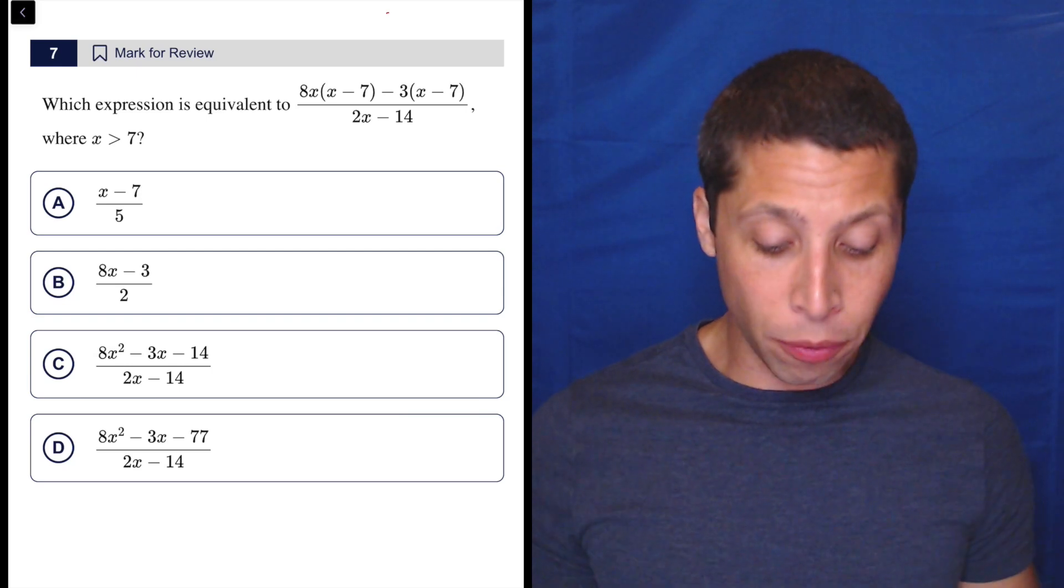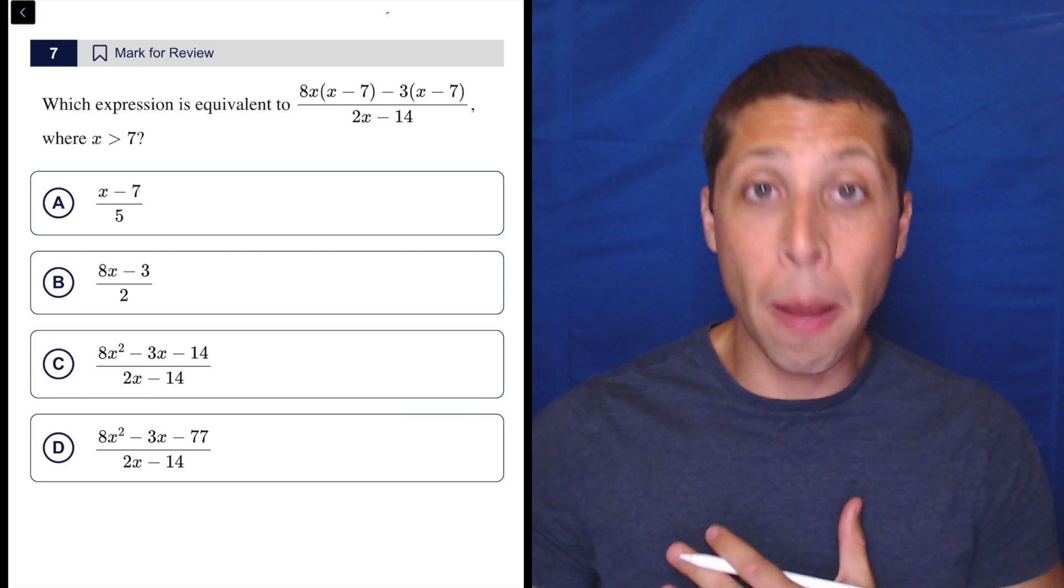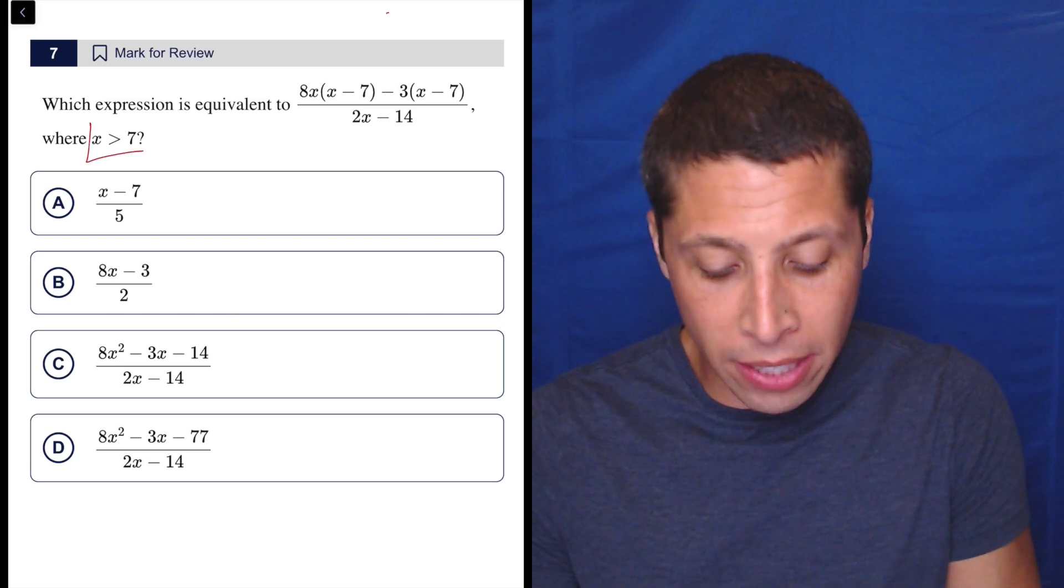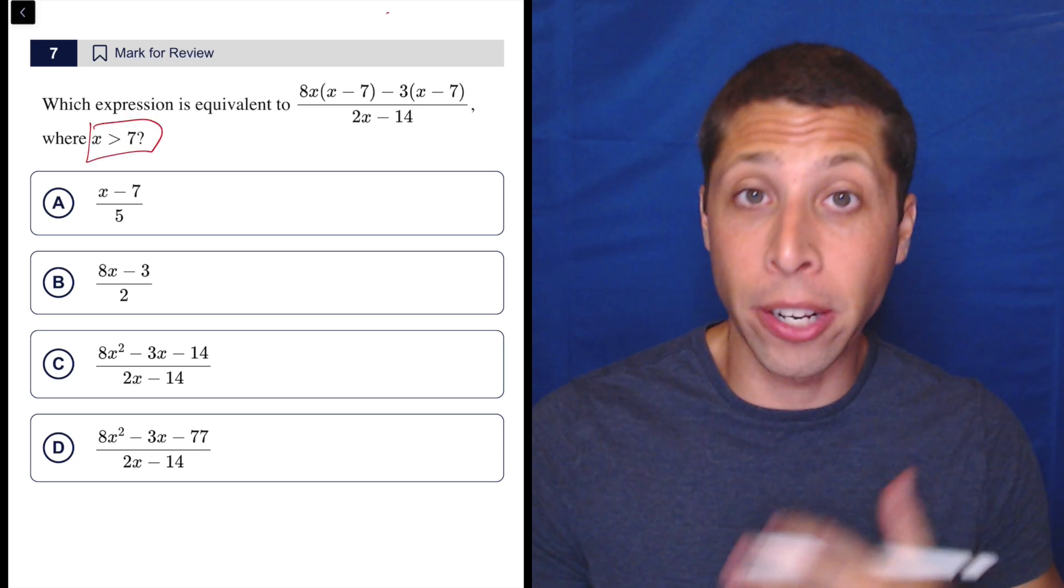Now, this is a harder question. We can tell from the algebra that we have a much more complicated thing. We've got fractions now, which add their own complexity. Plus, we have a stipulation. X has to be greater than seven.